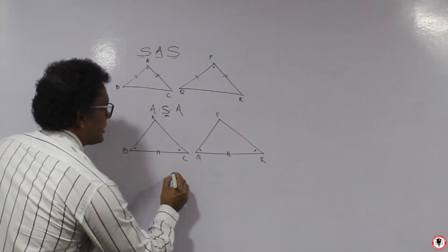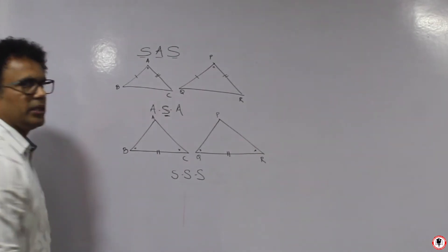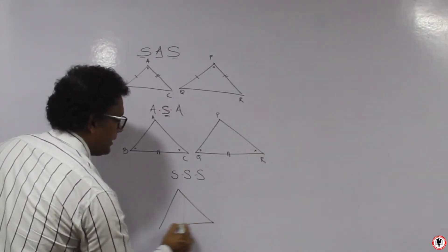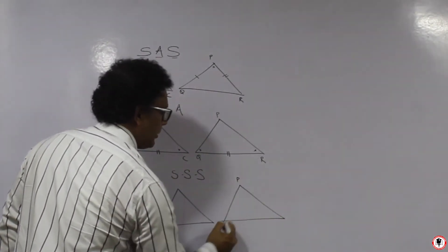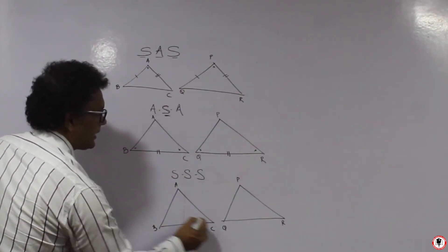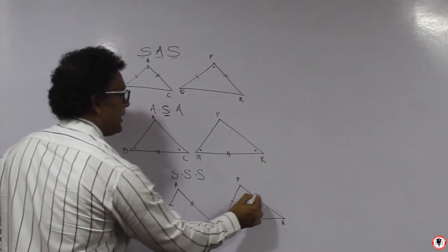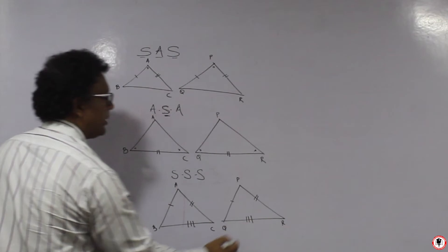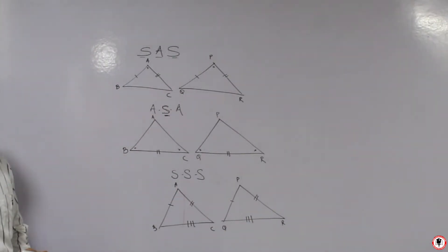The next stage is SSS — the easiest test — which stands for Side-Side-Side. From the name itself you can make out: this side is congruent to the corresponding side, this side and this side are congruent, and this side and this side are congruent. Then we can say both triangles are congruent by the SSS test.